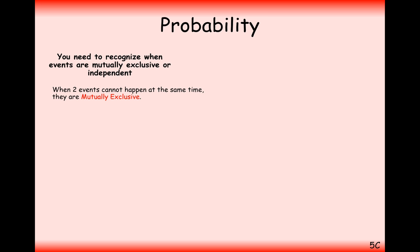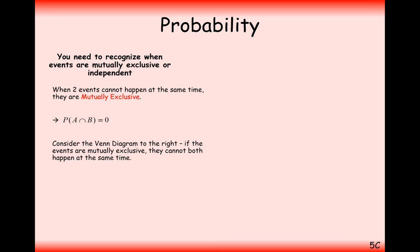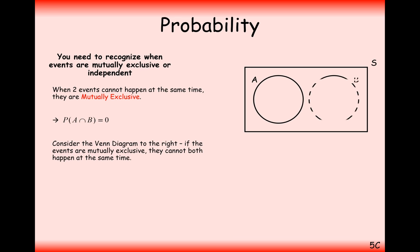Let's have a look at mutually exclusive events. Two events that cannot happen at the same time are called mutually exclusive, so the probability of both events happening equals zero. Consider a Venn diagram — if events are mutually exclusive, the Venn diagram would have no overlapping region. In other words, the probability of A or B is simply the probability of A plus the probability of B.